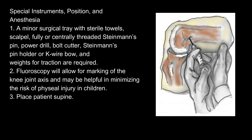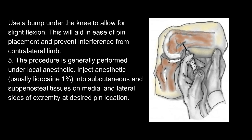3. Place patient with a bump under the knee to allow for slight flexion. This will aid in ease of pin placement and prevent interference from the contralateral limb. 5. The procedure is generally performed under local anesthetic. Inject anesthetic, usually lidocaine 1%, into subcutaneous and subperiosteal tissues on medial and lateral sides of the extremity at the desired pin location.